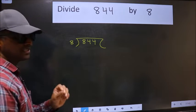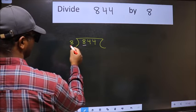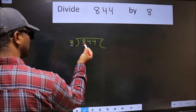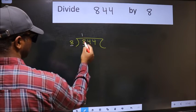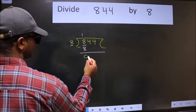This is step 1. Here we have 8 and here 8. When do we get 8 in the 8 table? 8 once is 8. Now we subtract and get 0.